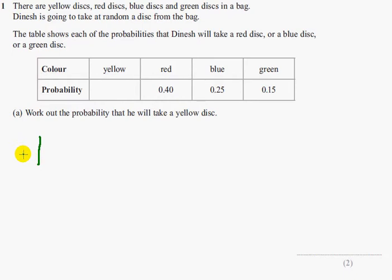So the simple case of 1, take away the red probability, take away the blue probability and also take away the green probability. And that leaves you with the probability of the yellow disc which is 0.2.